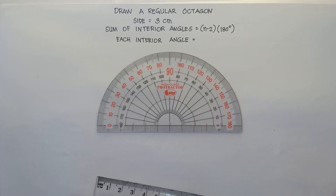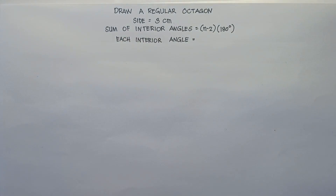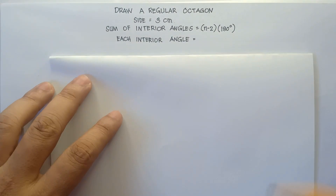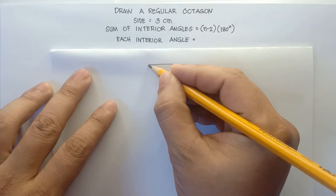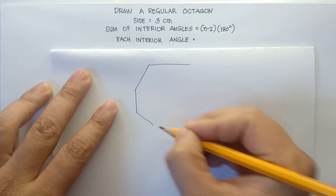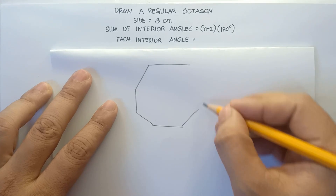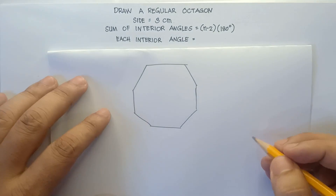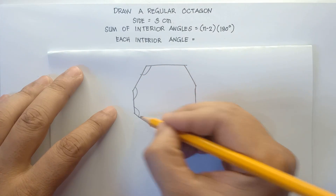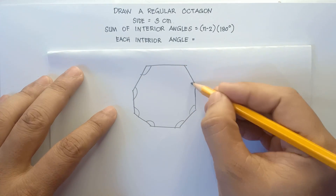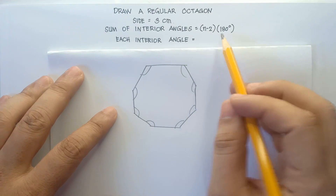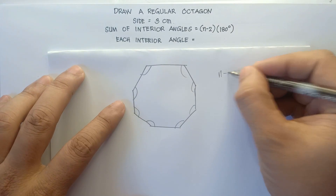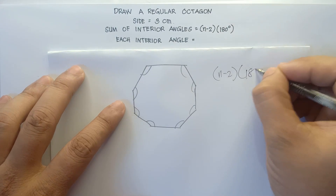So let's find the measure of each interior angle. If we have an octagon — just a simple octagon — let me draw this one. We can find the sum of its interior angles using the formula: n minus 2 times 180 degrees.